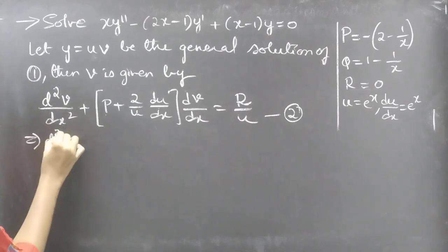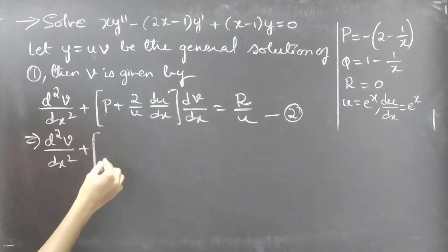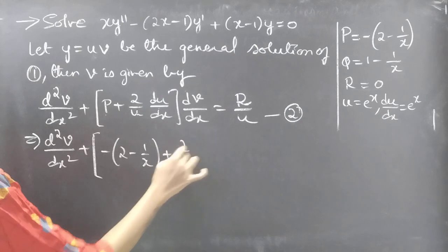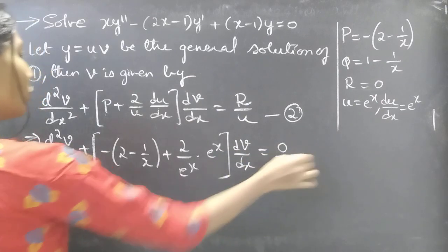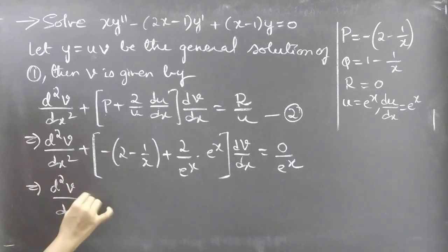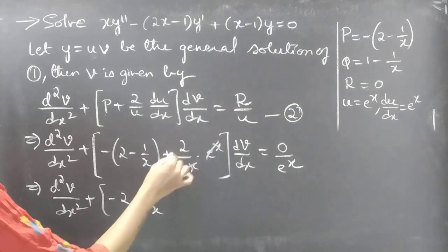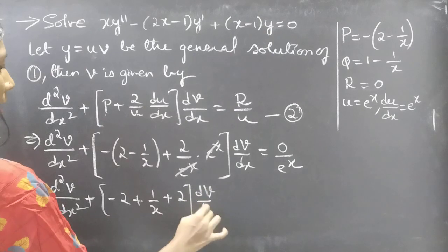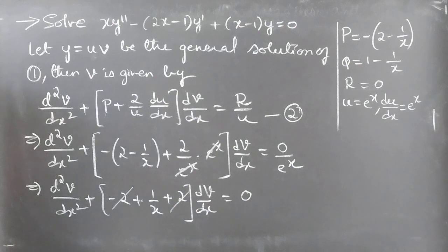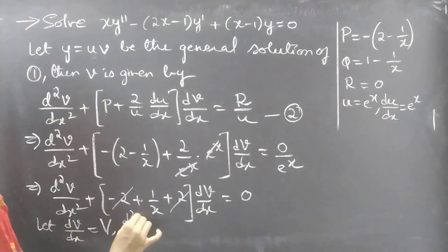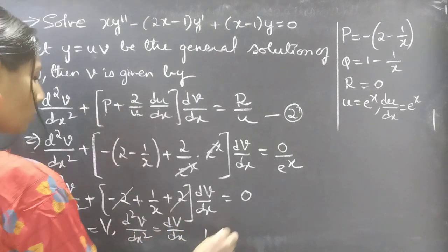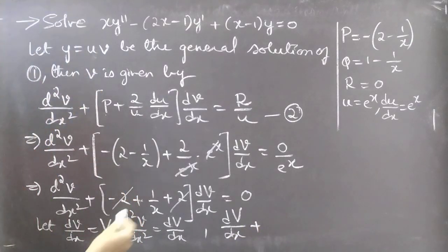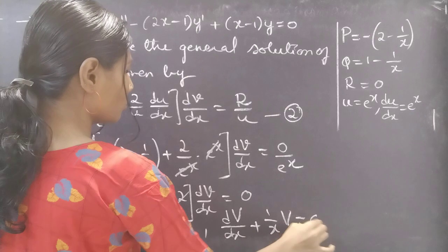Equation 2 becomes: d²v/dx² + [−(2 − 1/x) + (2/e^x)·e^x]·(dv/dx) = 0. The e^x terms cancel, giving d²v/dx² + [−2 + 1/x + 2]·(dv/dx) = 0. The −2 and +2 cancel, leaving d²v/dx² + (1/x)·(dv/dx) = 0. Let dV/dx = V (capital V), so d²v/dx² = dV/dx, and the equation becomes dV/dx + (1/x)·V = 0.